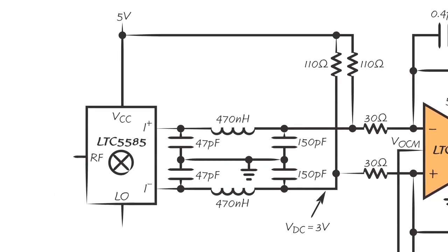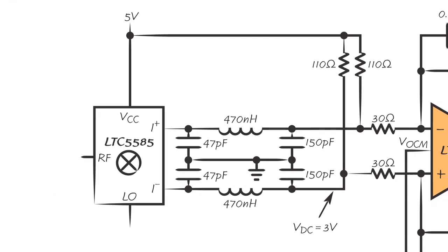On the other end is the LTC5585, which is an RF demodulator, which frequency translates an RF signal to a DC-coupled baseband output. Because of the way that that component is constructed, its DC level is higher, at about 3V.